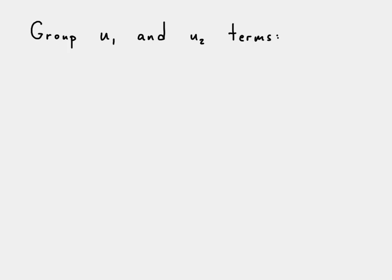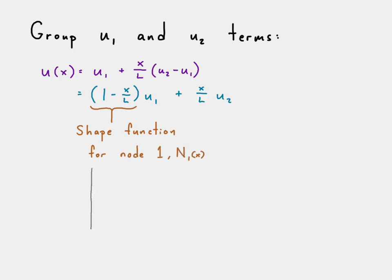We want to group those terms together. So when we rearrange this, we get the following. And we say, well, that's going to be our shape function for node 1.